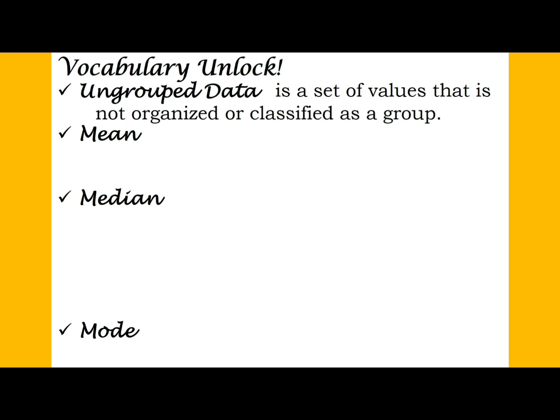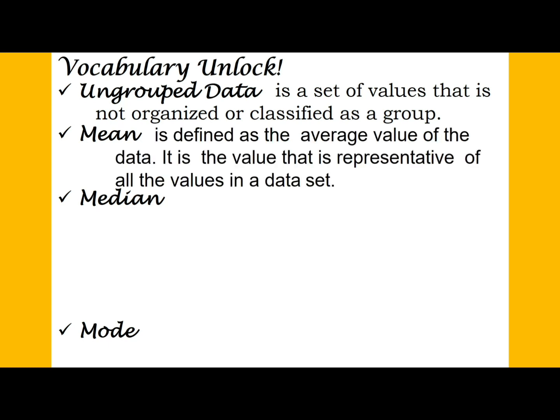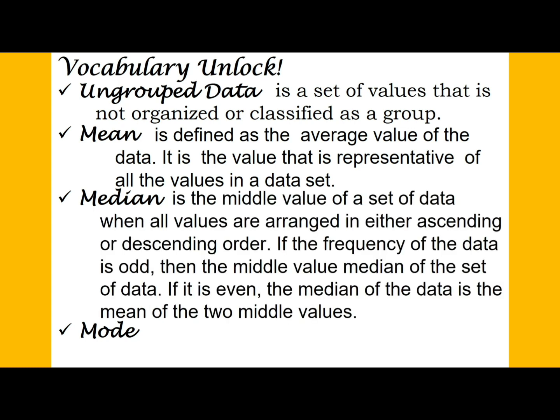When we say mean, this is defined as the average value of the data. In other words, mean is an average — it is the value that is representative of all the values in a data set. When we say median, this is the middle value of a set of data when all values are arranged in either ascending or descending order.